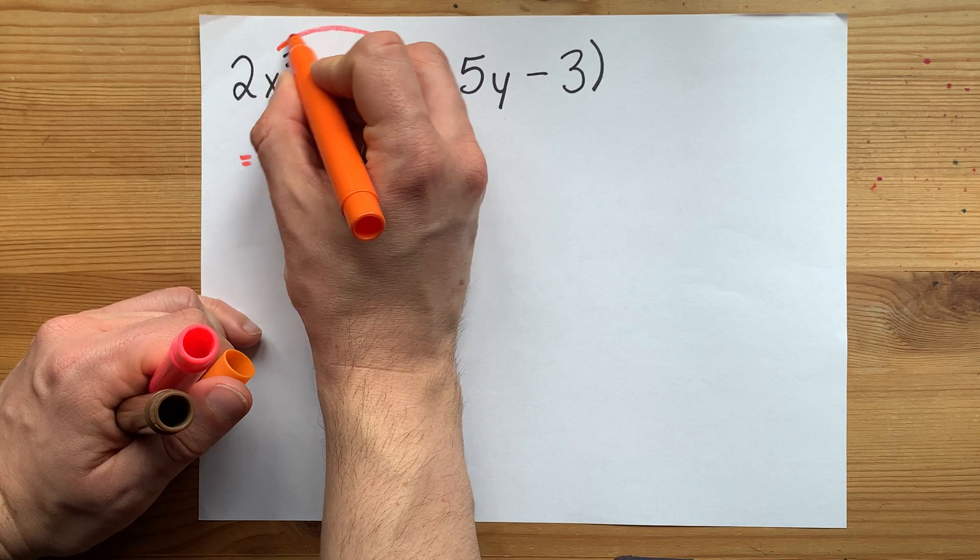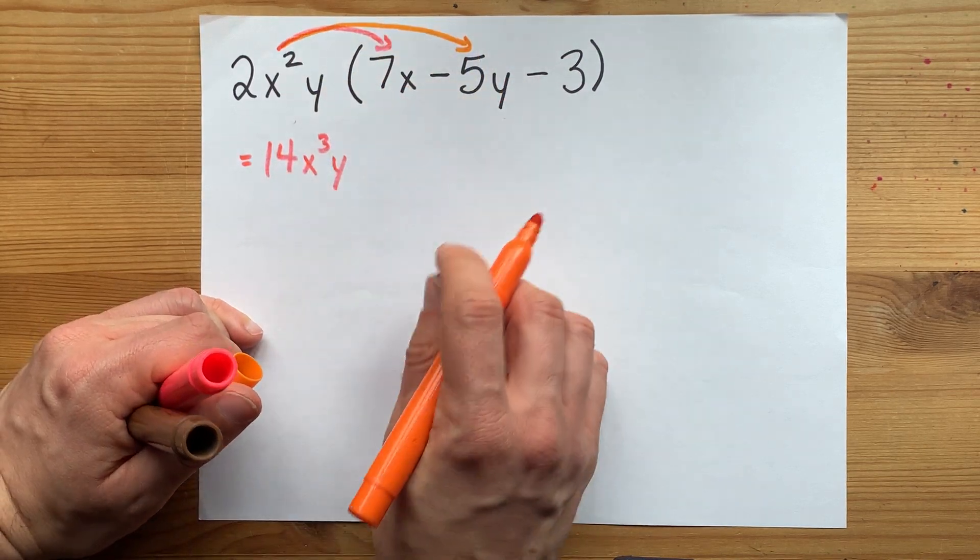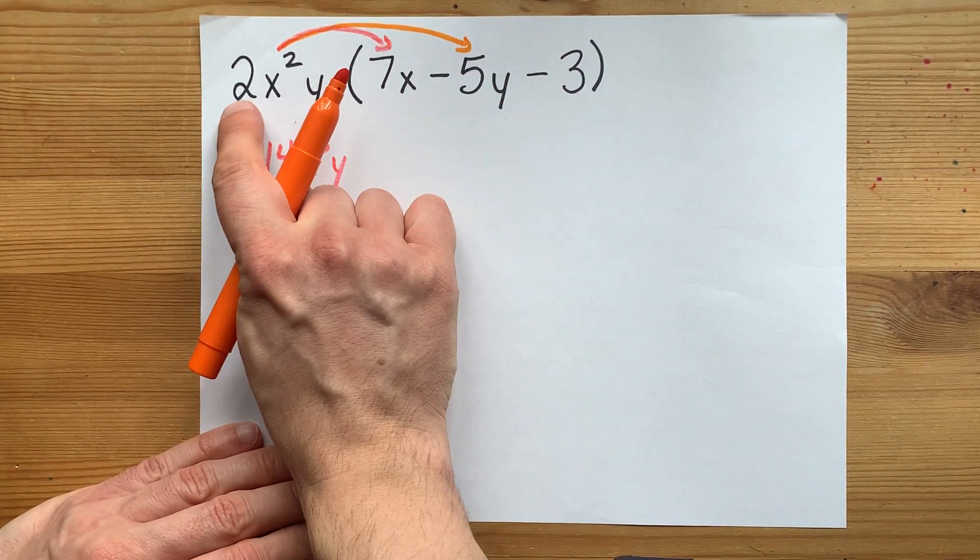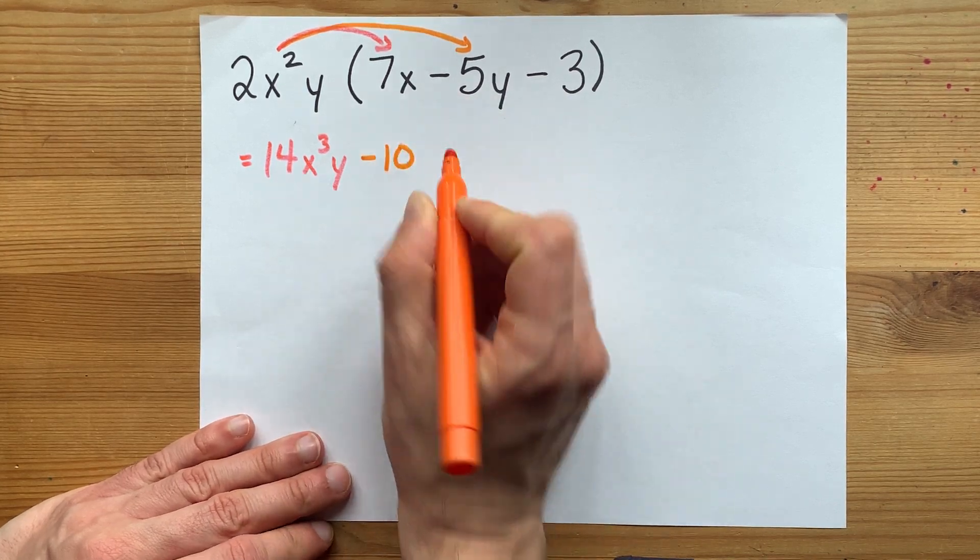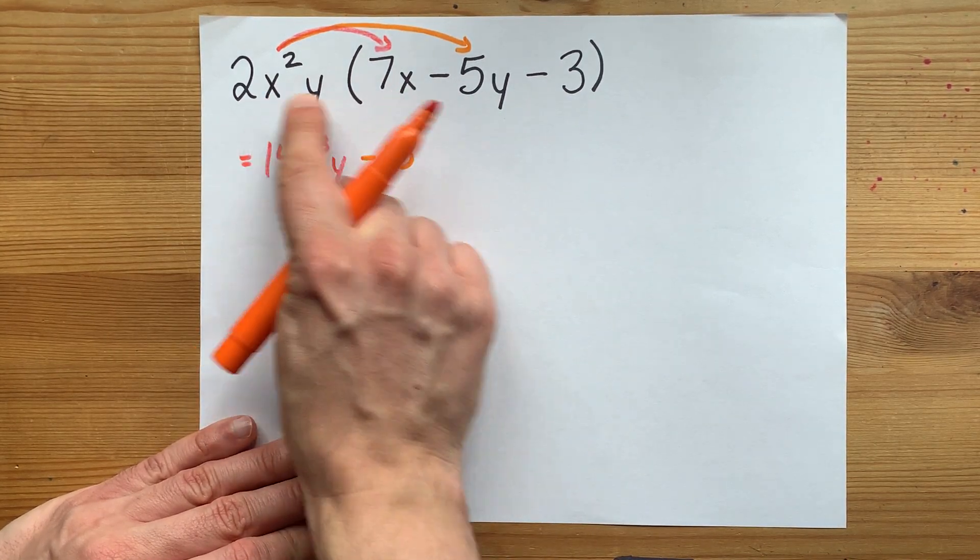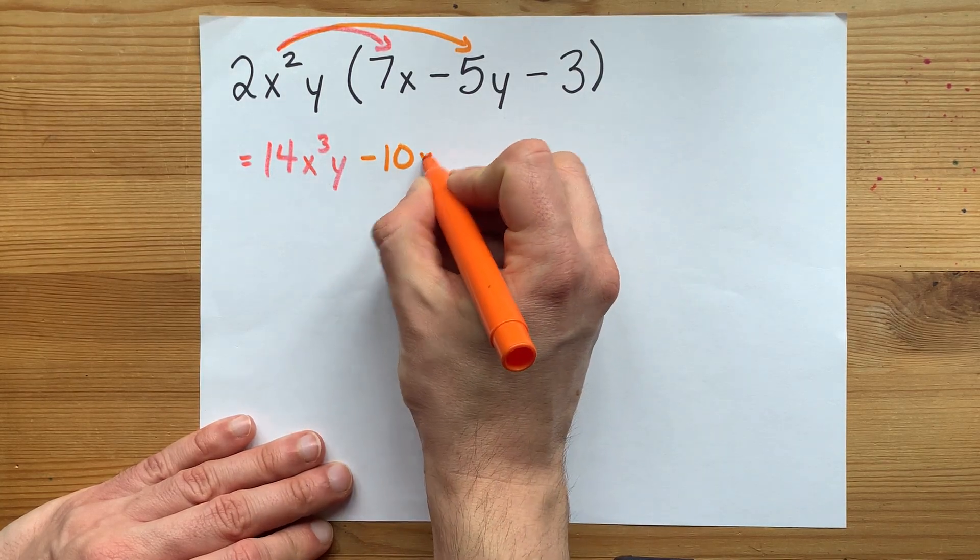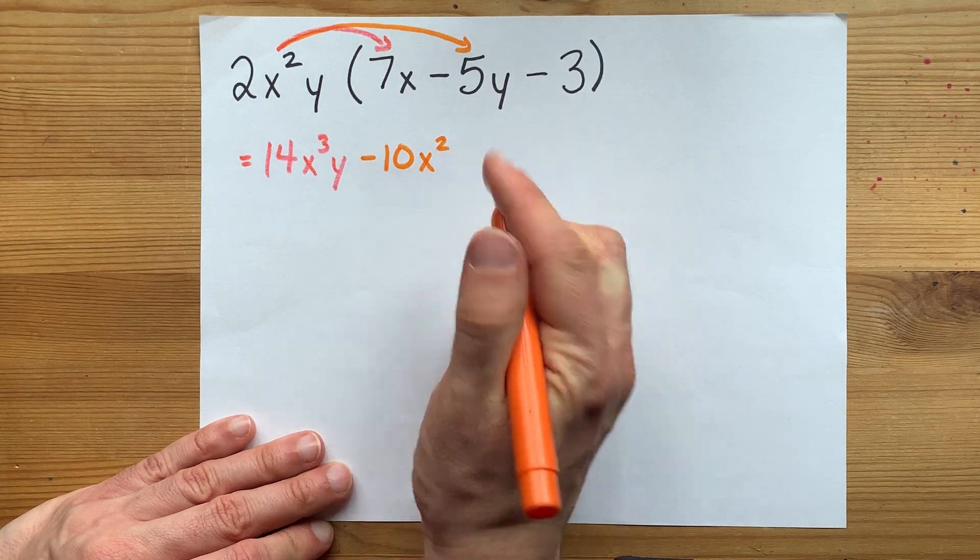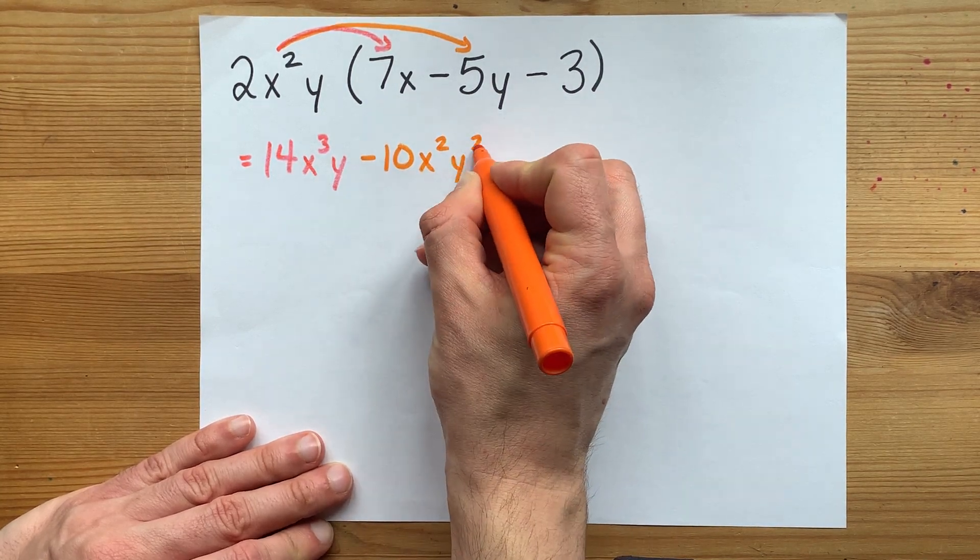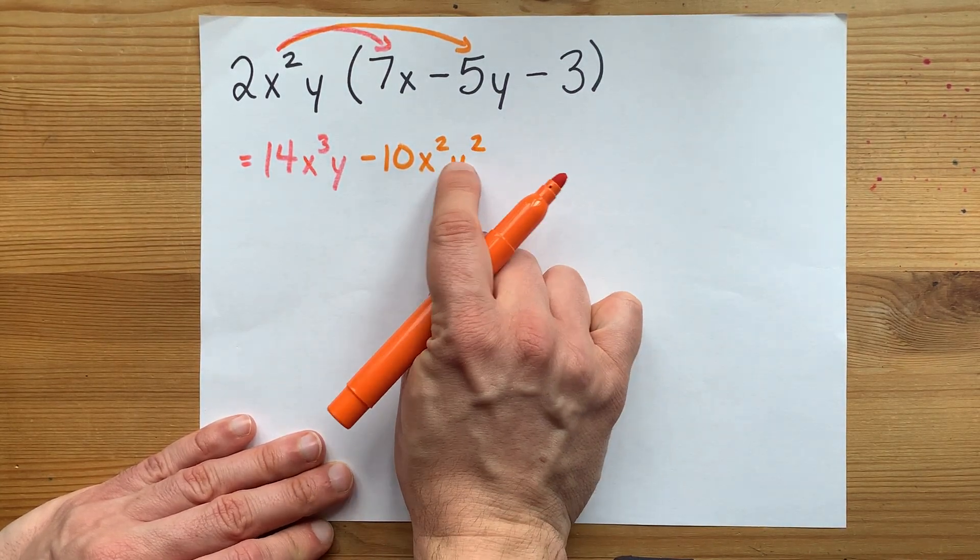2 times negative 5. Multiply the numbers to get negative 10. x squared with no x's here. So you're left with x squared. y times an extra y. You now actually have 2y, so that's x squared y squared. See?